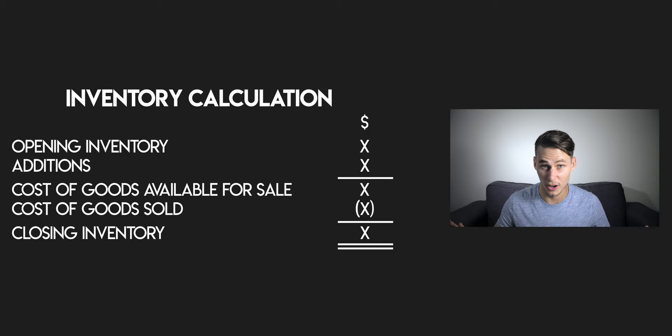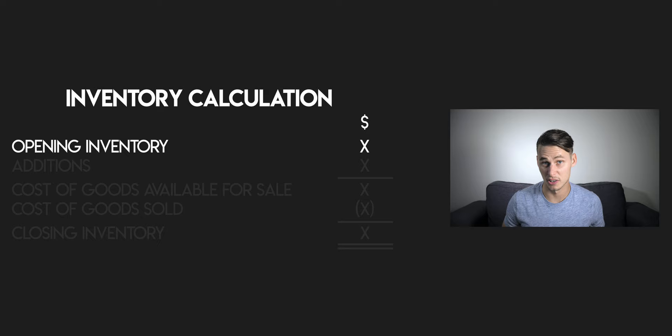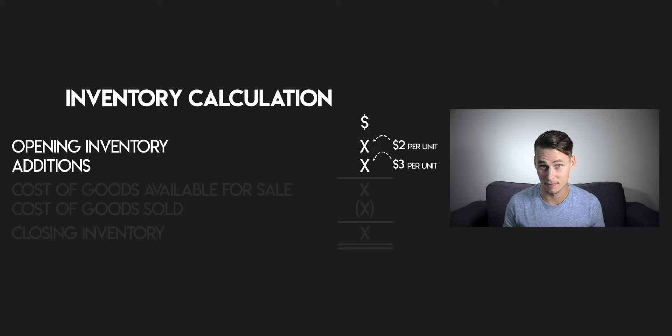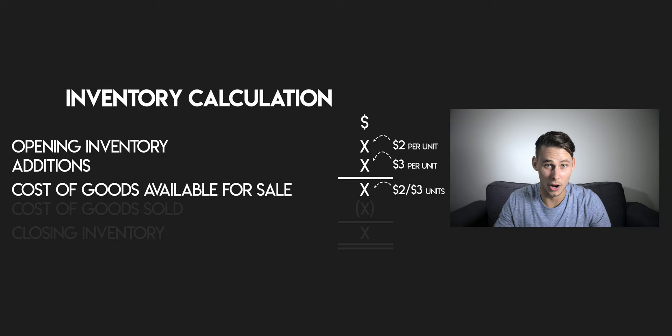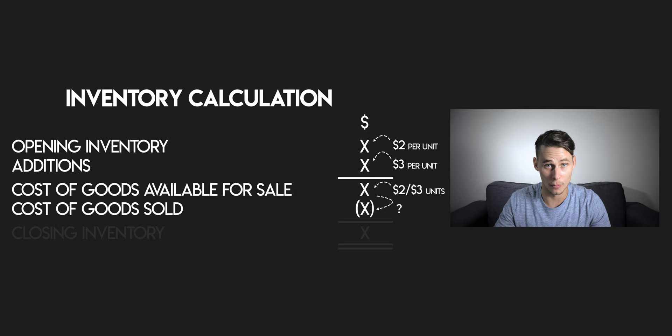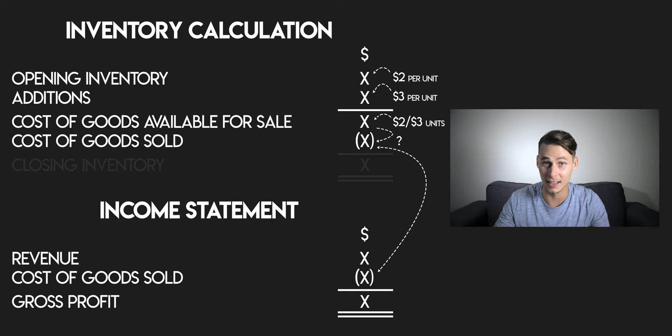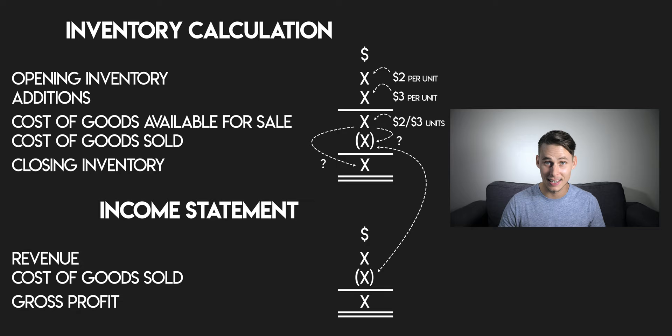But in reality, this isn't always the case. Your opening inventory might have cost you $2 per unit, but your additions might have cost you $3 per unit. So your inventory on hand — your cost of goods available for sale — could be made up of a whole mix of $2 and $3 units. When you make a sale, you need to work out how much of this cost flows out of the inventory account into your cost of goods sold account, and how much should remain in your closing inventory. To work this out, you can use cost flow assumptions — rules that help us estimate what these cost flows are.